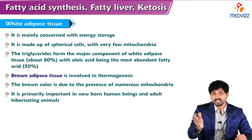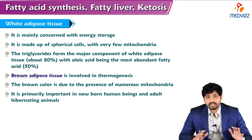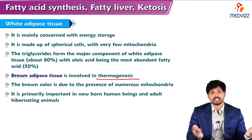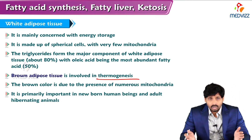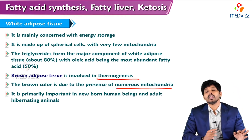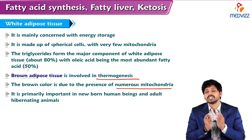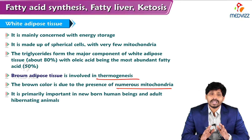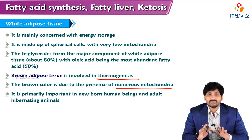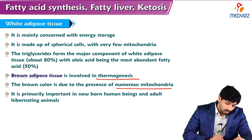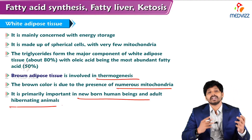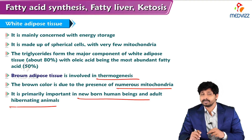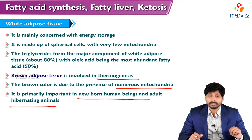Triglycerides form a major component of white adipose tissue, with oleic acid being the most abundantly present fatty acid at about 80%. Brown adipose tissue is involved in thermogenesis, meaning production of heat. The brown color is due to the presence of numerous mitochondria. In brown adipose tissue, instead of producing ATP, most of the energy is dissipated as heat. It is primarily important in newborn human beings and in hibernating animals, and in people living in cold climates.